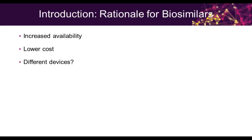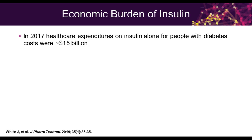In terms of the rationale for biosimilars, why do we have them at all? We're all used to the concept of generic medications, and obviously generics cost less — therefore there's increased availability on formularies and they're less expensive for patients. When you make a biosimilar, you actually make a different device that goes with it, so each company that makes a biosimilar insulin can make their own device. This allows the benefit of making different devices, but it also causes some patients to question whether it's the same insulin when it comes in a different device.